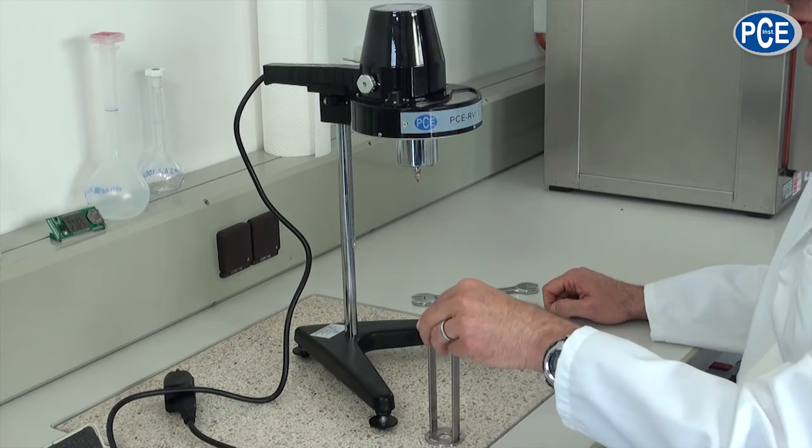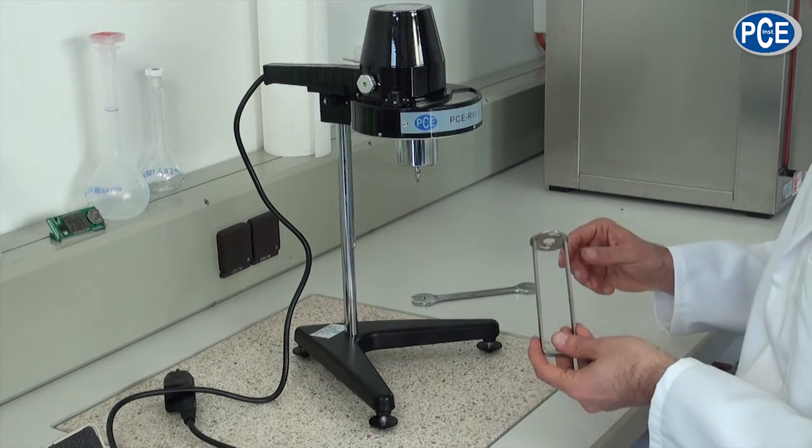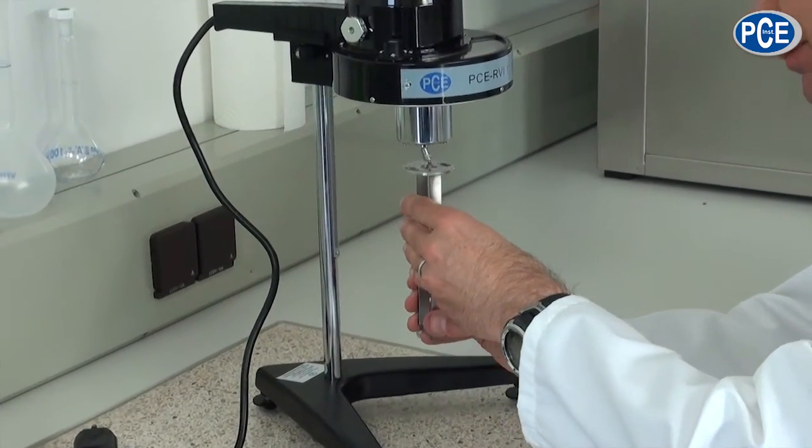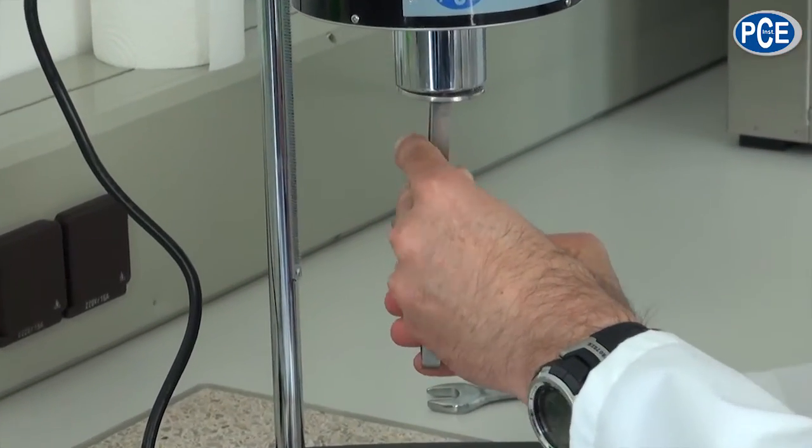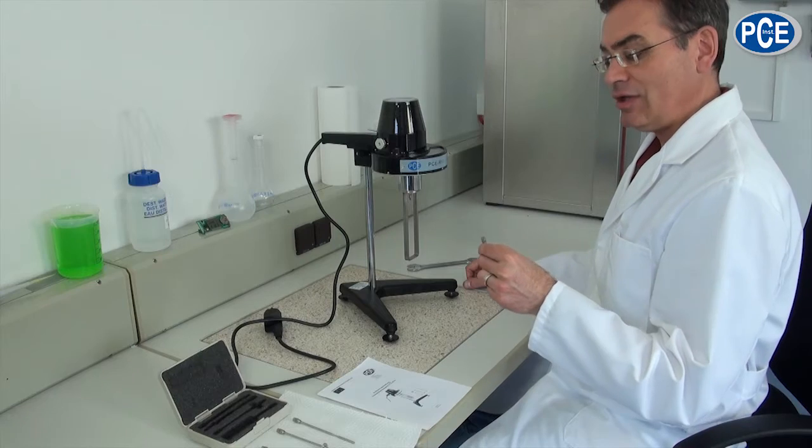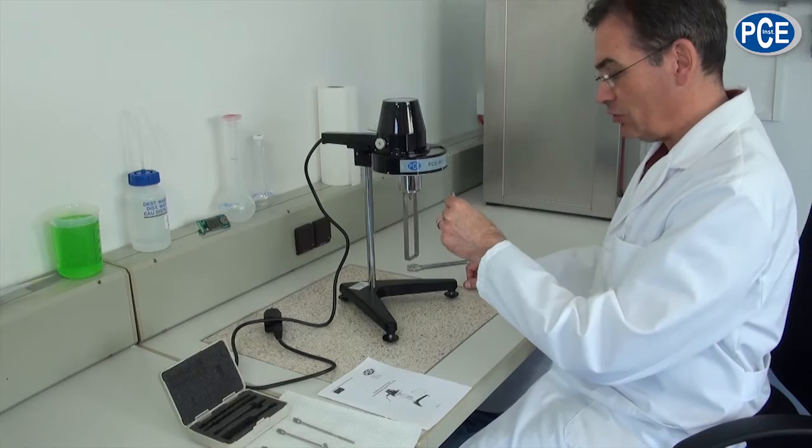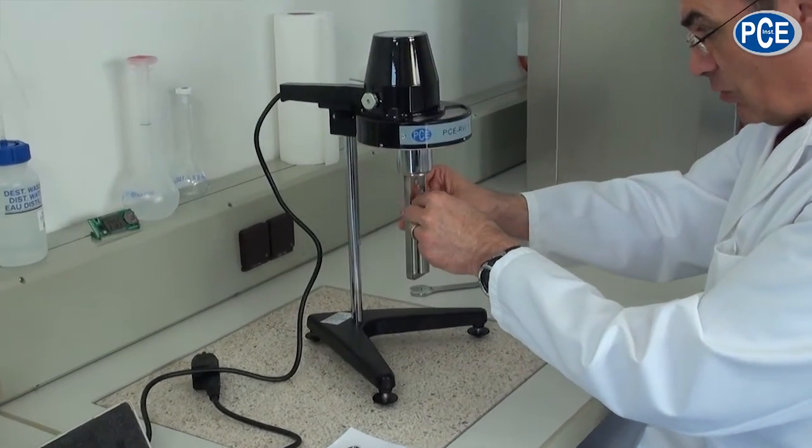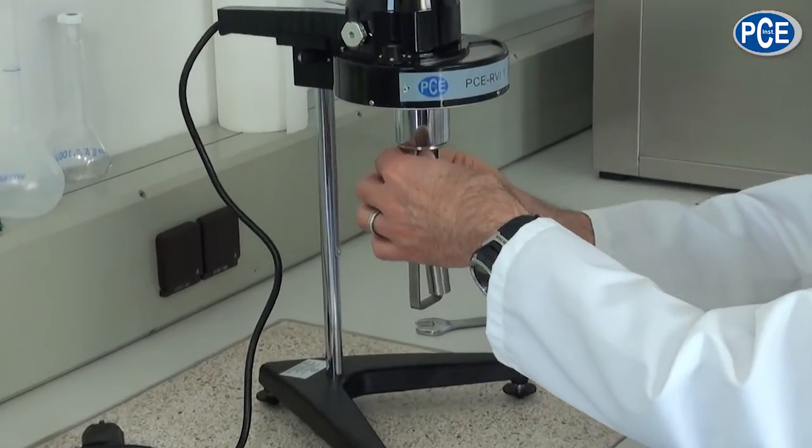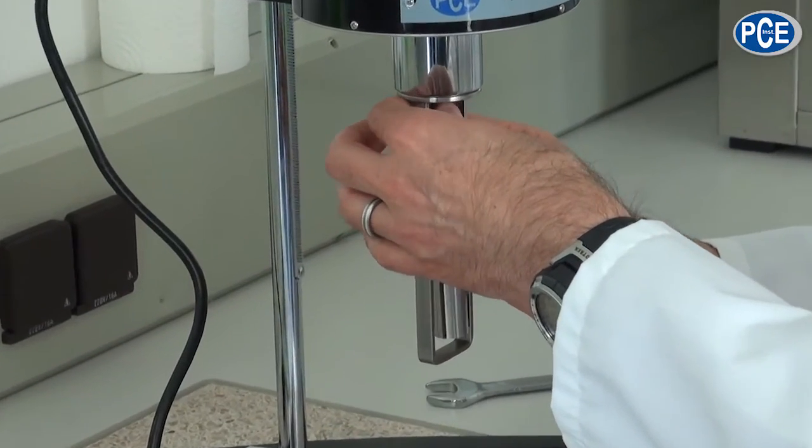In the next step the rotation cage is simply hooked in. In the next step the chosen rotation body is screwed in. For this the shaft is held up a little and the rotation body with a turn and movement fixed.